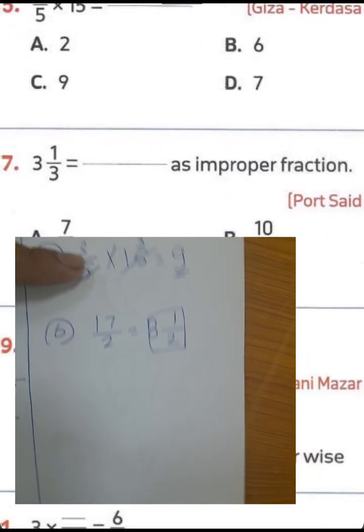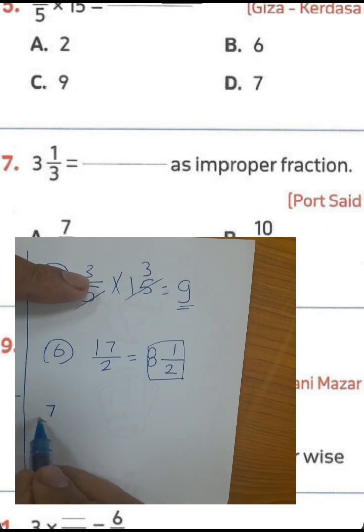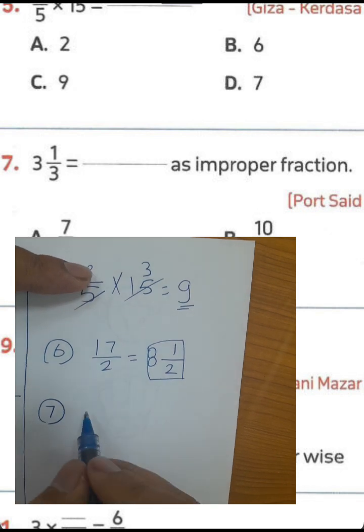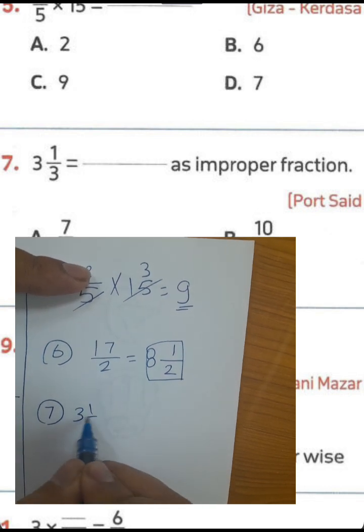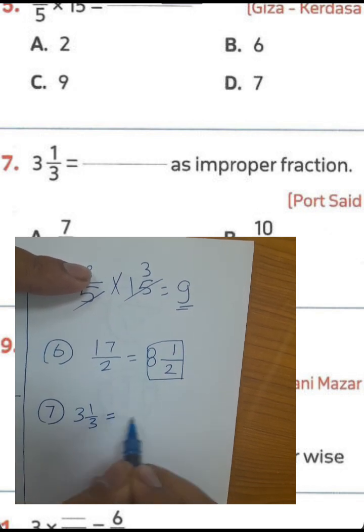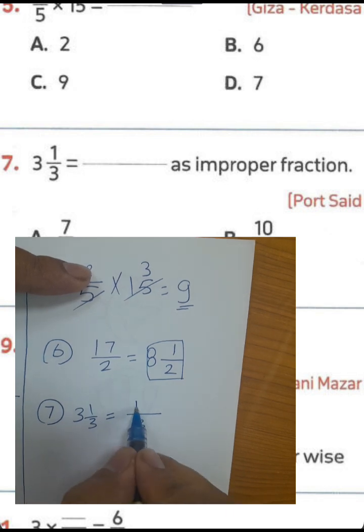Question number 7: 3 and 1 over 3 converted as an improper fraction. 3 times 3 equals 9, plus 1 equals 10, so the result is 10 over 3.